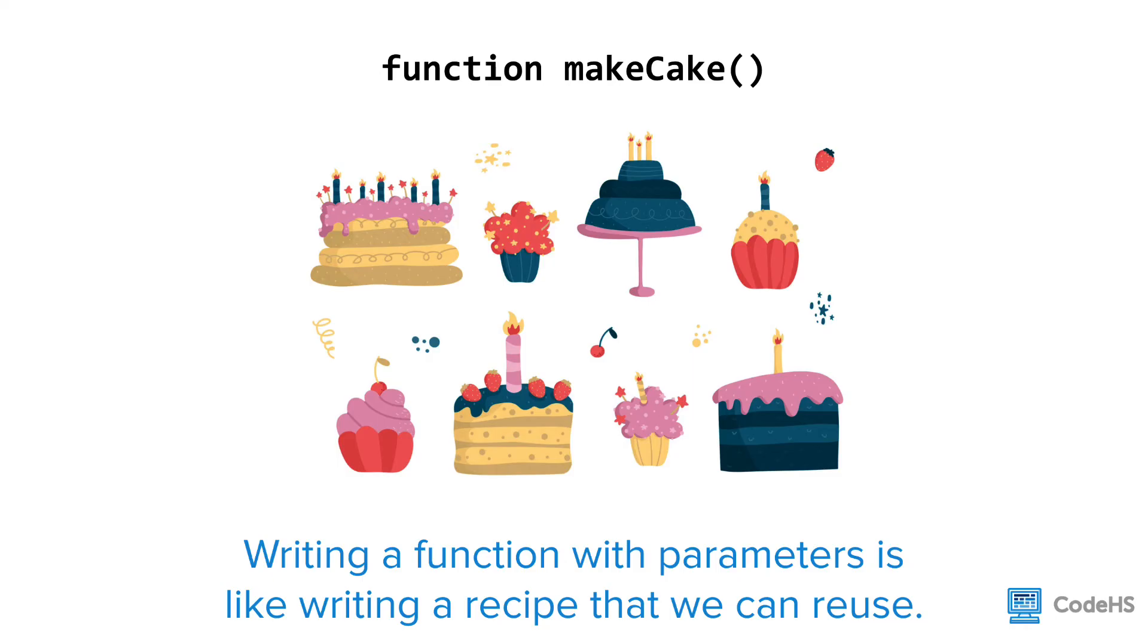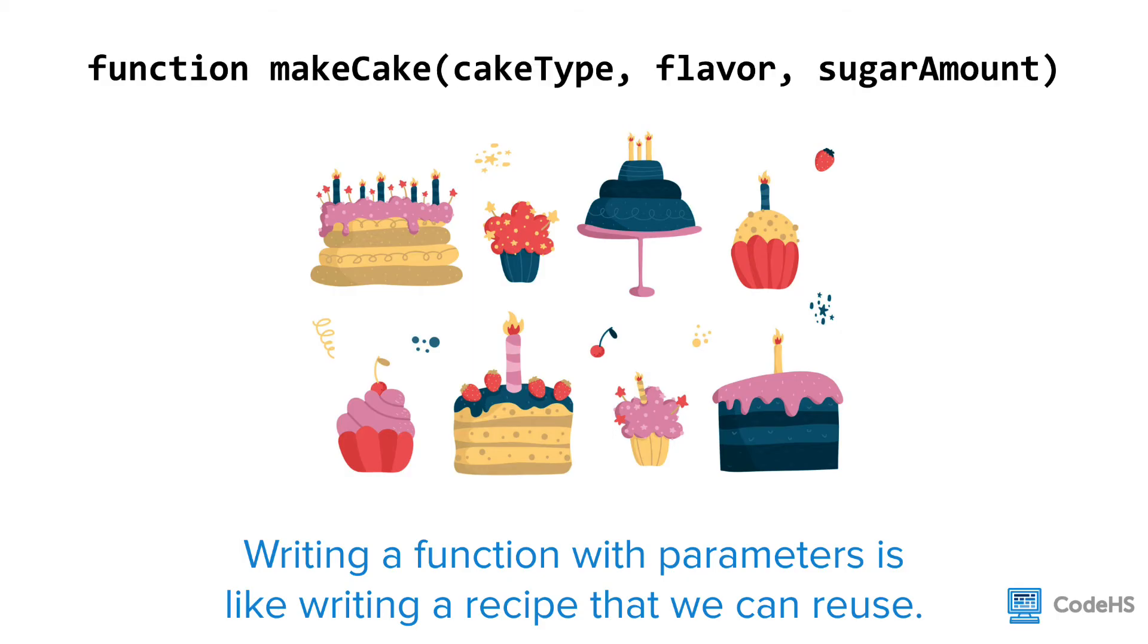To use an analogy, writing a function with parameters is like writing a recipe that we can reuse. Let's say we have a function called makeCake. By adding parameters, we can specify the type of cake, the flavor of cake, and the amount of sugar. This enables us to reuse the same function in different situations, which makes our code more efficient.